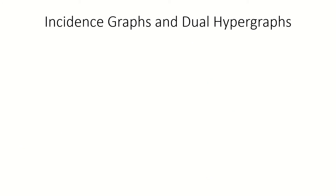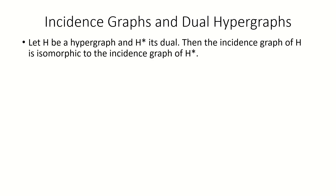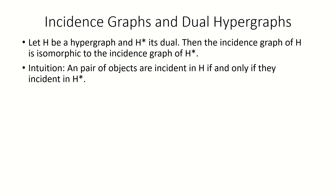Next, let's look at how incidence graphs relate to dual hypergraphs. The incidence graphs of a hypergraph h and its dual h-star are isomorphic. The intuition behind this is that a pair of objects in h that were incident are still present and incident in h-star. It's just that whatever object in the pair that was a vertex is now an edge, and whatever object that was an edge is now a vertex.